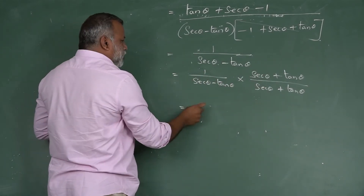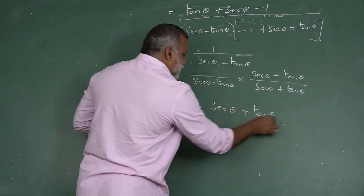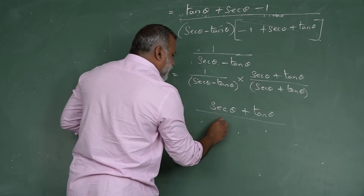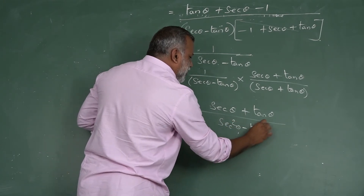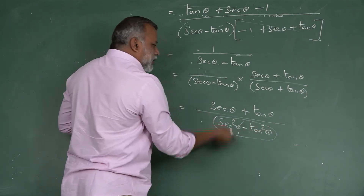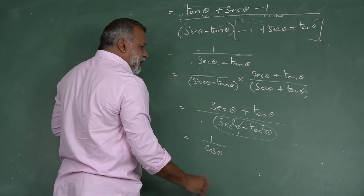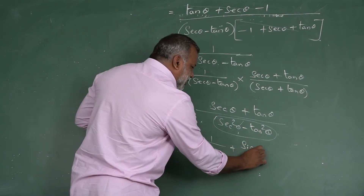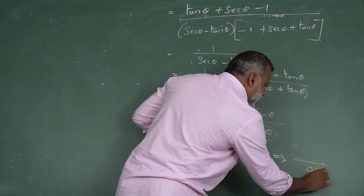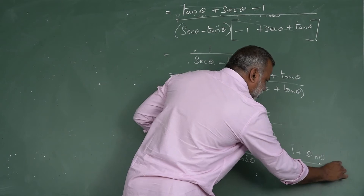The numerator becomes sec θ + tan θ. The denominator is (sec θ + tan θ)(sec θ - tan θ) = sec²θ - tan²θ = 1. So we have sec θ + tan θ, which equals 1/cos + sin/cos = (1 + sin θ)/cos θ. This is your RHS proof.